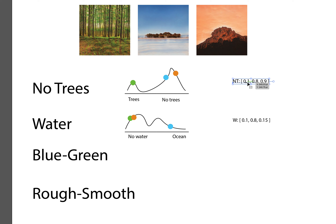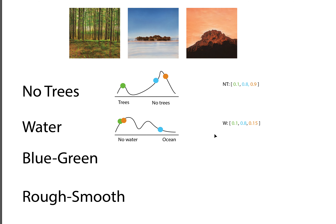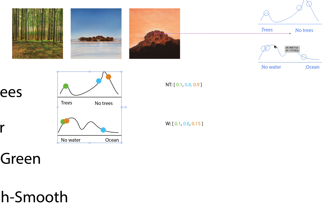So to be clear, these vector values go in order of the images — green, blue, and orange — not left to right on the probability distribution. For the no-trees vector: green is 0.1, blue is 0.8, orange is 0.9. For the water vector: green is 0.1, blue is 0.8, orange is 0.15. There are many more of these probability distributions, but let's take just these two and think about them in 2D space.